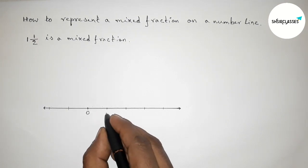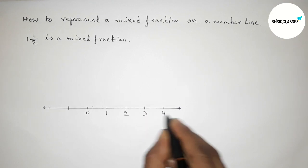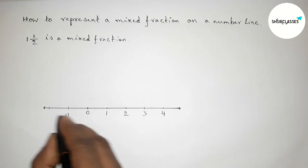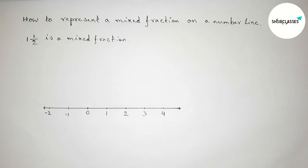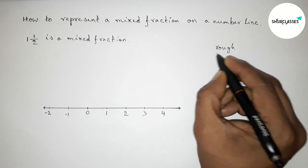After 0 here will be 1, 2, 3, 4 and continuous. Now in this side minus 1, minus 2 and continuous. So now we have to represent 1 1/2 on this number line.